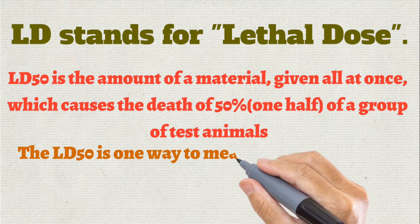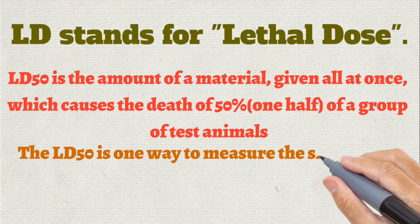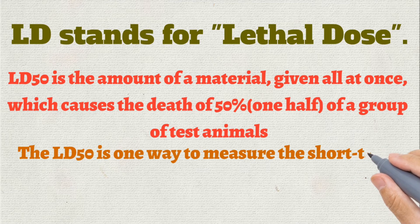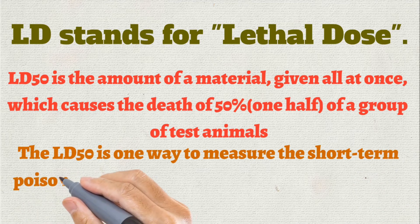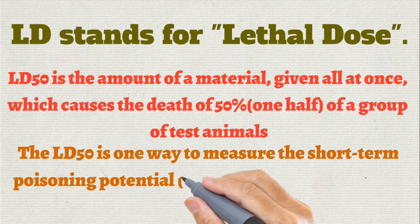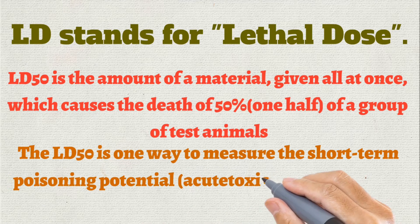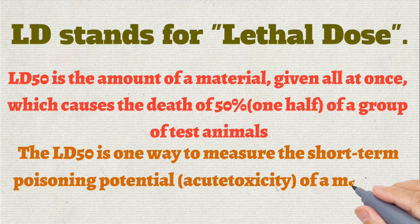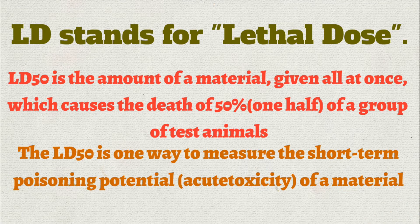LD50 is one way to measure the short-term poisoning potential, or we can call it the acute toxicity of the material. Short-term poisoning or acute toxicity is generally thought of as a single or short-term exposure where the effects appear immediately and are often reversible.